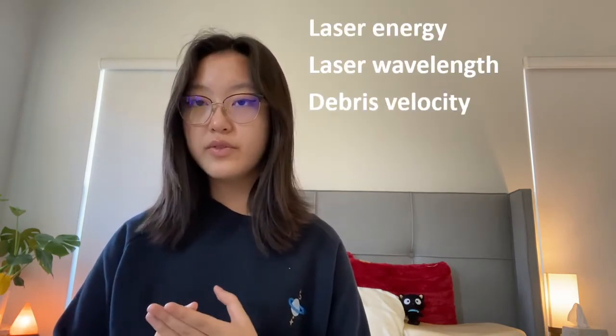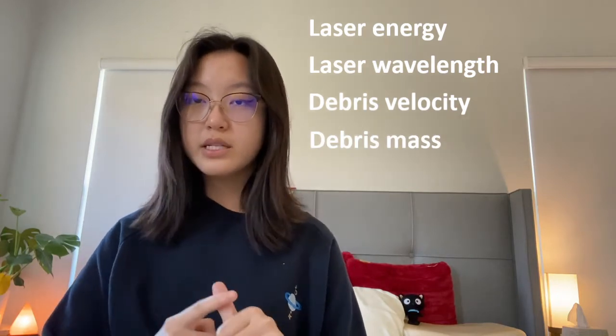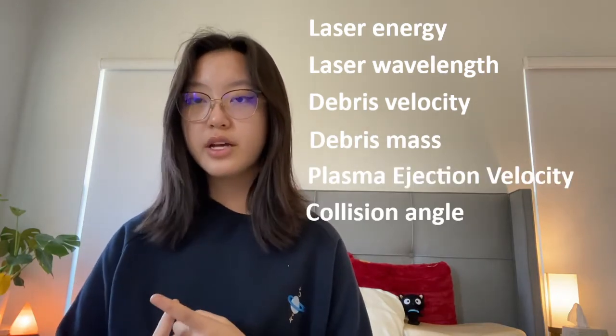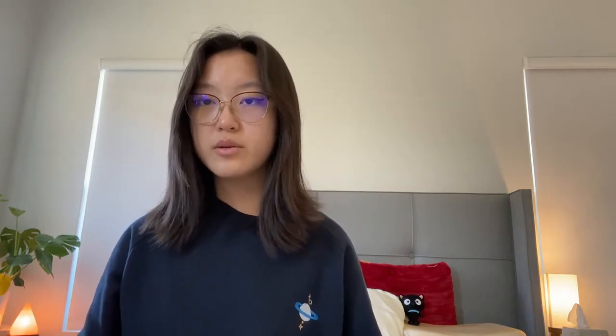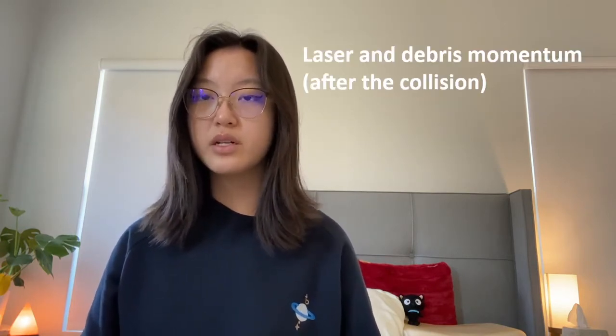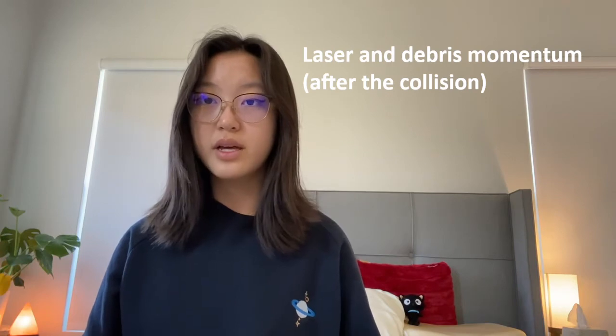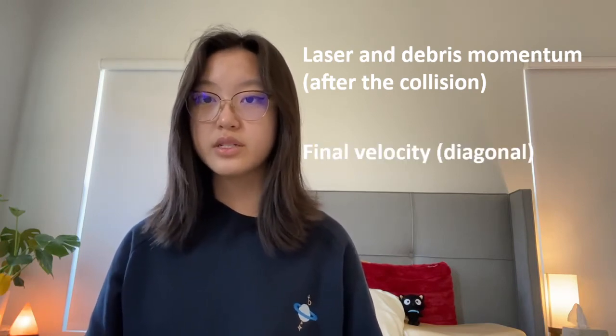Any box that's colored purple means it's a parameter input that can be changed. This includes things like the laser energy, the laser wavelength, the debris velocity, the debris mass, the plasma ejection velocity, and the collision angle between the laser and the debris. From that, the system outputs the laser momentum and the debris momentum after the collision in both the x and y direction, as well as the debris's velocity in the diagonal direction.